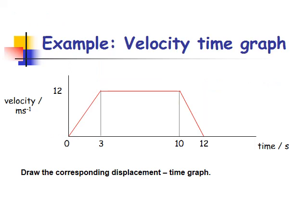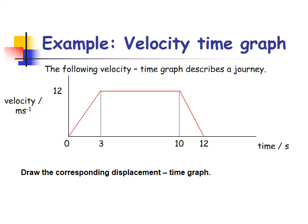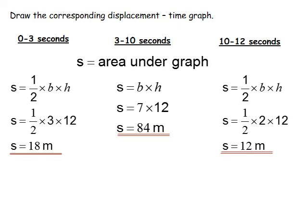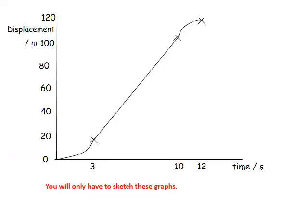Now we work out the displacement time graph from the velocity time graph. Remember, displacement is the area underneath the graph. We work out the area in each section: half times base times height for triangular sections, and base times height for rectangular sections. We only need to sketch this — the most important thing is the shape. The questions you'll be asked will most often involve drawing the acceleration time graph from a velocity time graph, or drawing the velocity time graph from the displacement time graph.